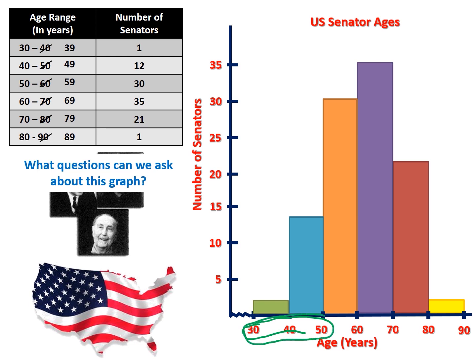Additionally, people between 30 and 40 are still establishing themselves in their careers. Voters typically choose people with experience, so that age group is still gaining it — serving as a supervisor in their township or doing public service. At around age 50, kids go to college or move out, so now 50-year-olds have both experience and more freedom, which is why we see a spike in that age range.